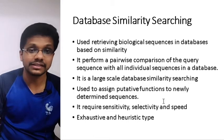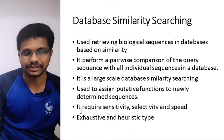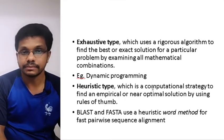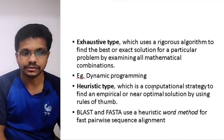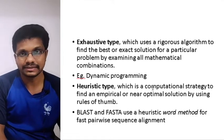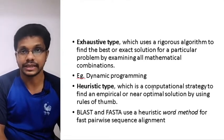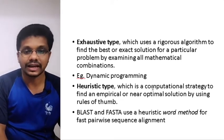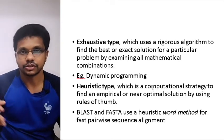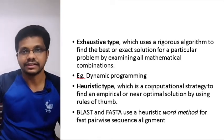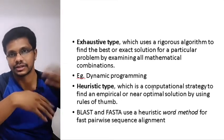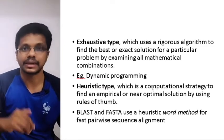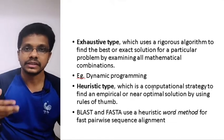Database similarity searching is used to assign putative functions to newly determined sequences. It requires sensitivity, selectivity, and speed. We can use exhaustive or heuristic methods. Exhaustive methods use rigorous algorithms to find the best and exactly matching solutions — dynamic programming can be used — but for large databases, this takes a very long time and requires huge processing power. In the heuristic method, sequences are converted into words, and similarity between those words produces hits that are then refined.